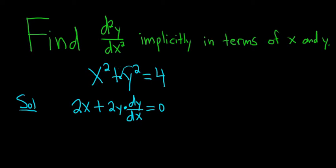We have to find the second derivative, so we have a choice. We can differentiate everything again with respect to x, or we can solve for dy/dx. In this particular case, it looks really simple to solve for dy/dx, so let's go ahead and do that. Minus 2x.